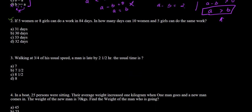Question 2 says: if 5 women or 8 girls can do a work in 84 days, in how many days can 10 women and 5 girls do the same work? Here, 5 women alone can complete the work in 84 days, or 8 girls alone can complete it in 84 days. We need to find how many days 10 women and 5 girls working collectively will take.